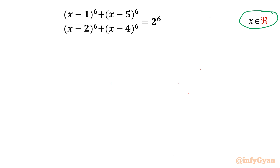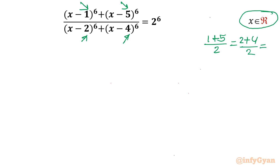Let's get started by considering a substitution. If you look, the numbers 1 and 5 are in the numerator, and 2 and 4 are in the denominator. The mean value of 1 and 5 equals the mean value of 2 and 4, which is equal to 3. So I will use the substitution x minus 3 equal to a.